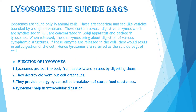The next organelle is lysosome, which is also called the suicide bag of the cell. Let's study why they are called the suicide bag of the cell. Lysosomes are found only in animal cells — they are not present in plant cells. They are spherical and sac-like vesicles bounded by a single membrane. These contain several digestive enzymes which are synthesized in the rough endoplasmic reticulum, concentrated in Golgi apparatus, and finally packed in the lysosome.